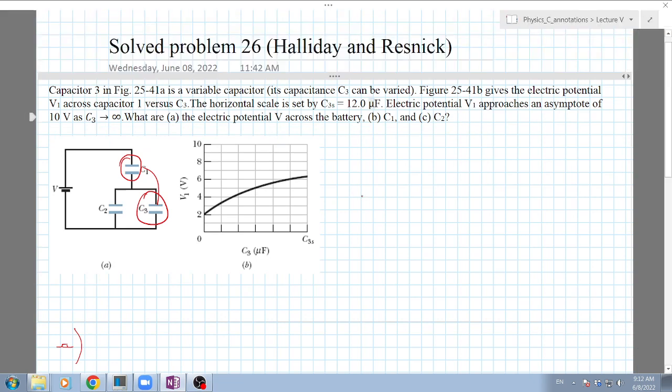Electric potential V1 approaches an asymptote of 10 volts as C3 goes to infinity. What are the electric potential V across the battery? That's item A. Item B is to calculate the capacitance of capacitor 1, and item C is to calculate the capacitance of capacitor 2.